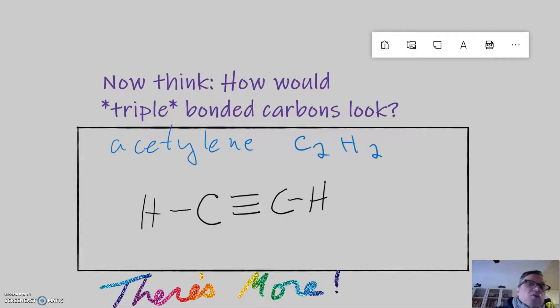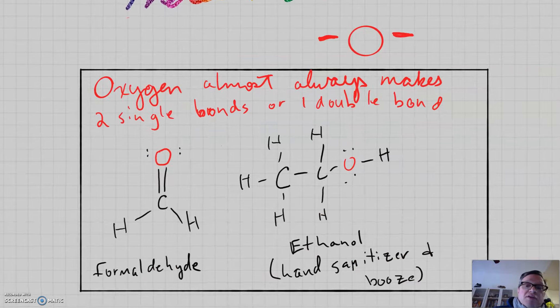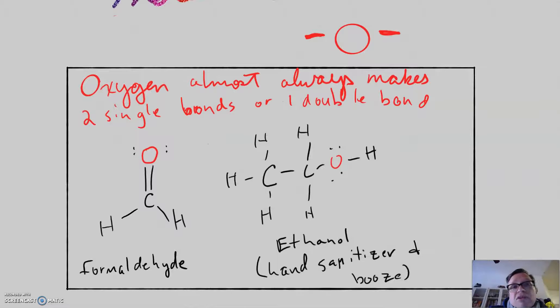But there's more to these organic molecules. They often have more elements than just carbon and hydrogen. Oxygen and nitrogen are two common ones. Remember that oxygen makes two bonds. So, that means usually you'll see oxygen either double bonded with two pairs or single bonded twice with two pairs. Pause and take a look at these two.